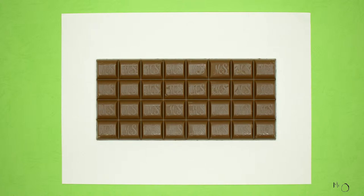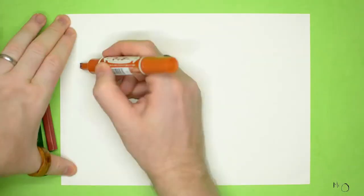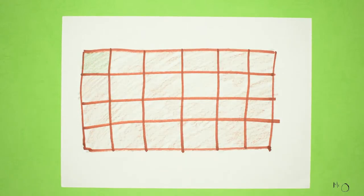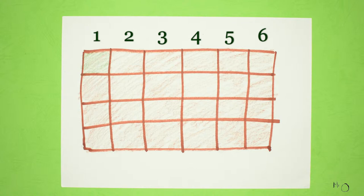To play Chomp you need a bar of chocolate and a friend. If you don't have a bar of chocolate then you can use a picture. Any size is okay. Mine is six pieces by four pieces.